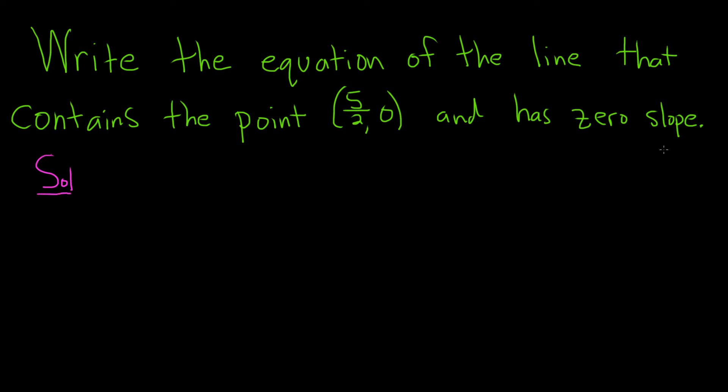So whenever you have a problem like this where it tells you that the slope is 0, this means that you have a horizontal line. So horizontal lines are the lines that have a slope of 0.